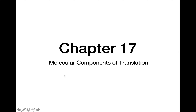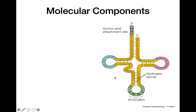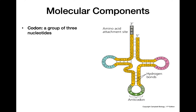This video is going to be about the molecular components of translation. A codon is a group of three nucleotides, and from the other video we know that this codon is what's going to be read on the mRNA molecule to figure out what amino acids to bring in.